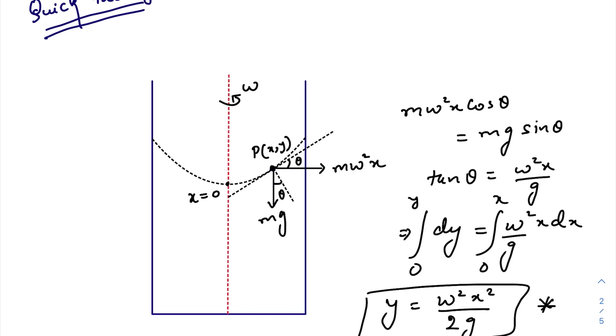So mω²x cos θ and mg sin θ will be equal, right? Now tan θ = ω²x/g. We know that tan θ is nothing but the slope at this point, so that is dy/dx, and just pulling dx here on the right-hand side and integrate it from 0 to x, from 0 to y...